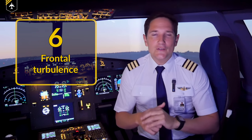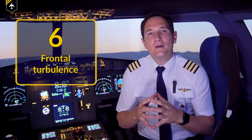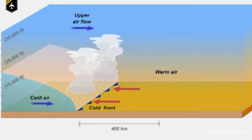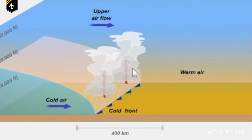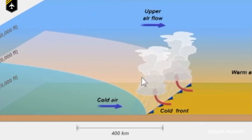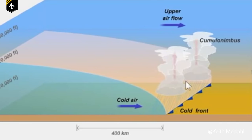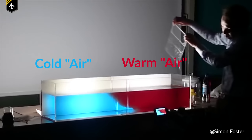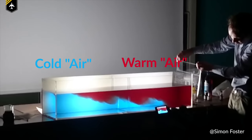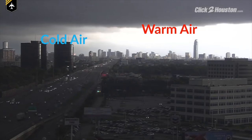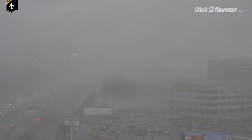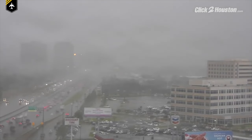Number six: frontal turbulence. Frontal turbulence is caused by the lifting of warm air. Cold air moves in like a big wedge underneath warm air — cold air is always heavier and denser than warm air, so it slides under the warm air and pushes it upward. Anytime air rises upward, it expands, cools, and loses its ability to hold moisture, creating a band of clouds and precipitation along a cold front. Within that band, abrupt wind shifts between the unstable warm air and cold air cause severe turbulence.